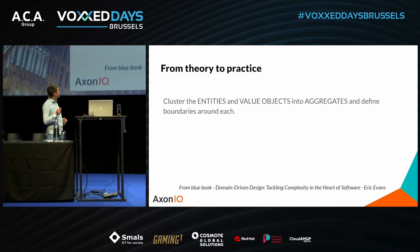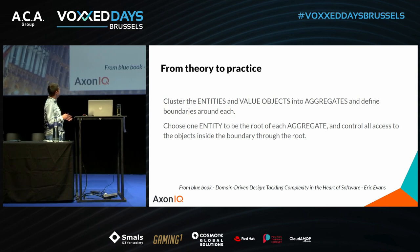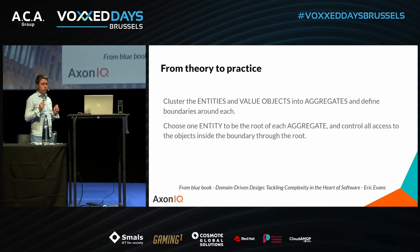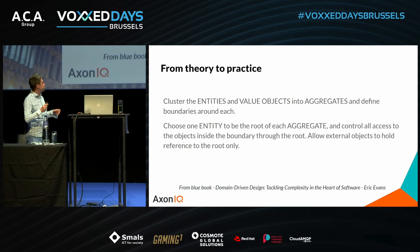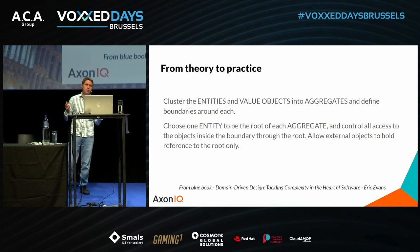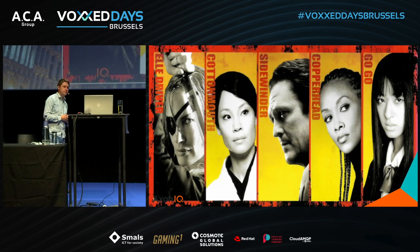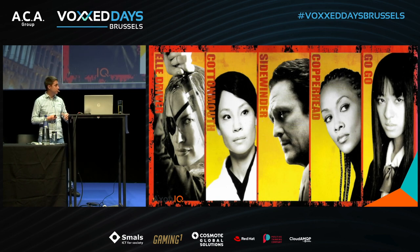We should choose one entity to be the root of each aggregate and control all access to the objects inside the boundary through the root, and allow external objects to hold reference to the root only. But what does it mean in practice? How are we going to build our intuition when it comes to designing our systems? I would say it is still vague.